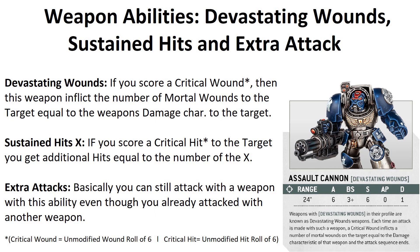Sustained Hits: weapons have the ability Sustained Hits X, where X is a number. If you score a critical hit — an unmodified hit roll of 6 — you score additional hits equal to X. For example, if my weapon has Sustained Hits 2 and I roll a 6, it scores 3 hits: one normal and 2 additional hits. Simple as that.